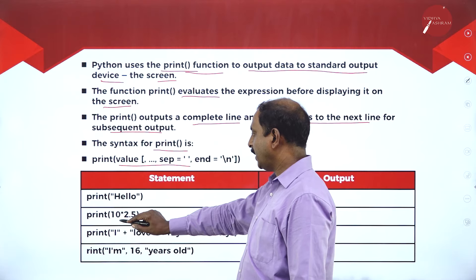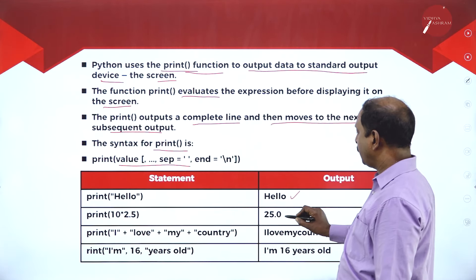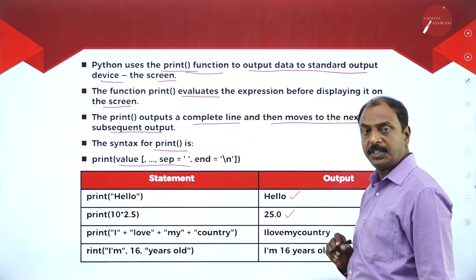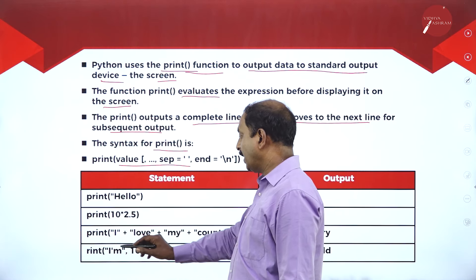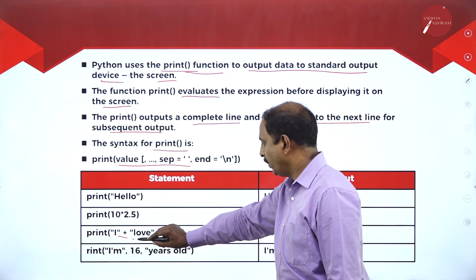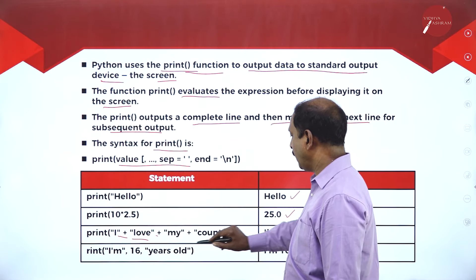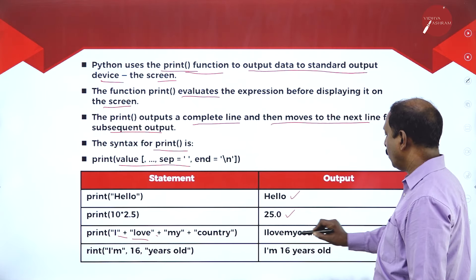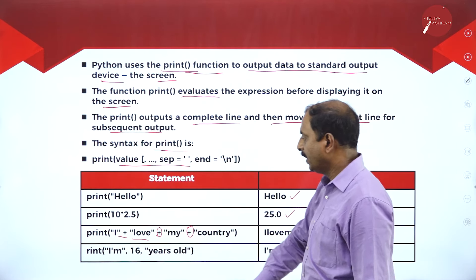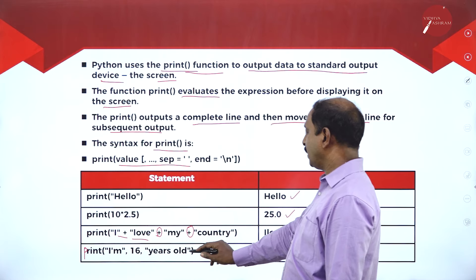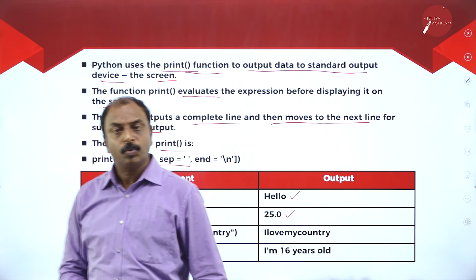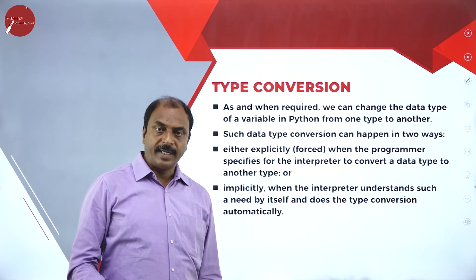For example: print(10 * 2.5) — this evaluates the multiplication and prints the result. Similarly, print("I" + " love" + " my country") — the plus acts as a concatenation operator, so the output will be: I love my country. Another example: print("I am 16 years old") — the output will be: I am 16 years old. This is how to make use of the print function as an output statement in Python.